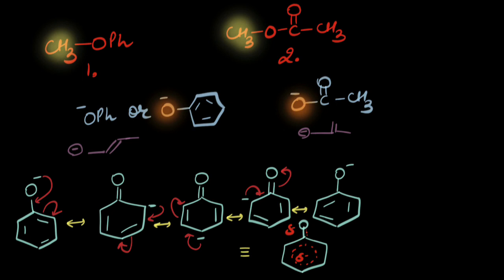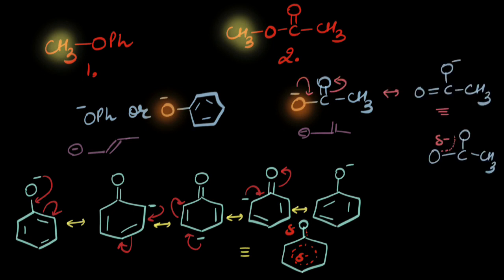Now let's draw the resonating structures for the second one. The negative charge is being shared between these two oxygens. There is resonance in both cases. We may feel that since the first anion has more resonating structures it would be more stable, but if we look carefully, during this resonance the negative charge moves from the oxygen atom to the carbon atom, while in the second case the negative charge moves from one oxygen to another oxygen atom.